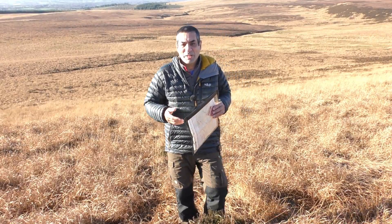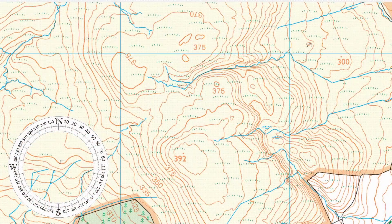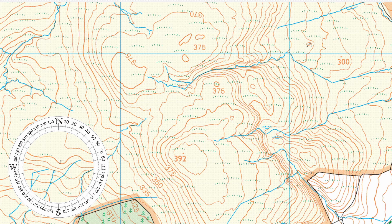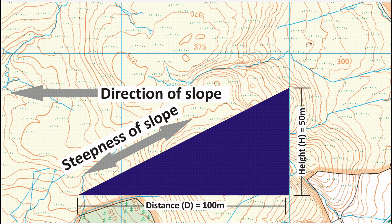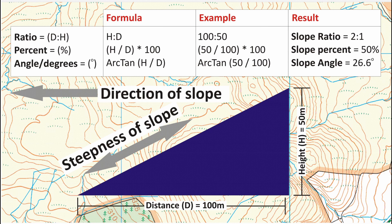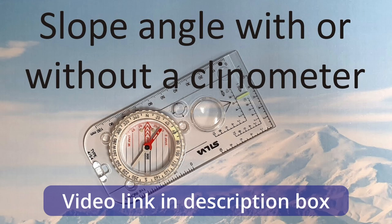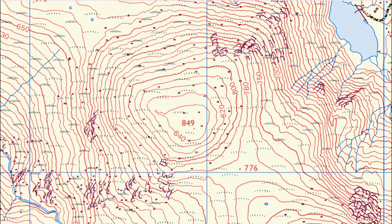Most of the time you'll know very approximately where you are on the map. As an example, today I know that I'm somewhere here on this map but I'm not exactly sure where. I can use the direction of the hillside I'm stood on to find out where I am. If you look at the side of any hill, the slope will have two main geographic characteristics: how steep it is and which direction it's going.